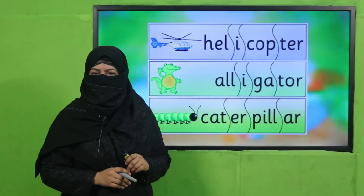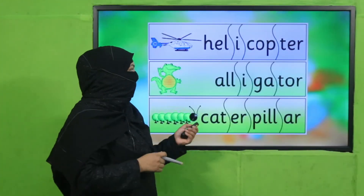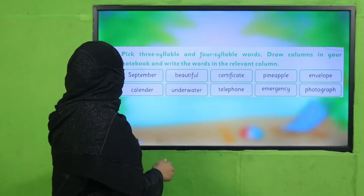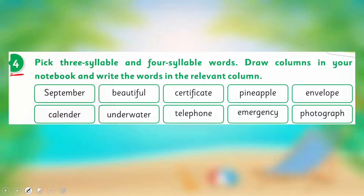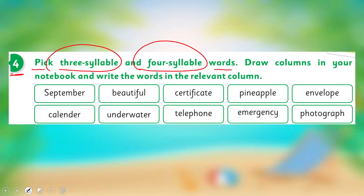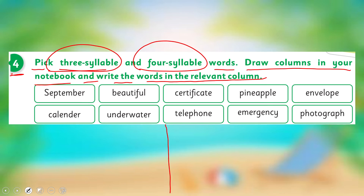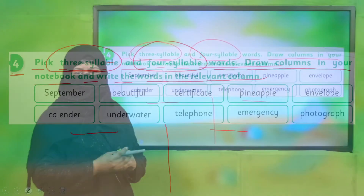Are you done with the activity? Good job! Now let's practice from your book. Complete question number two and question number four. You will pick three-syllable and four-syllable words, draw two columns in your notebook — one for three-syllable words and one for four-syllable words — and write them in the relevant column. Pause the video, complete this question in your notebooks, and then come back.